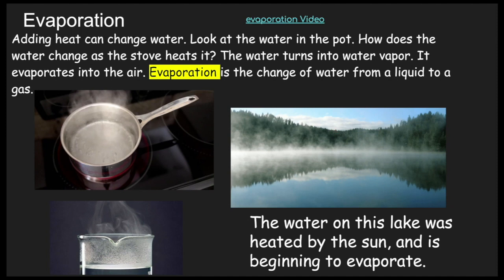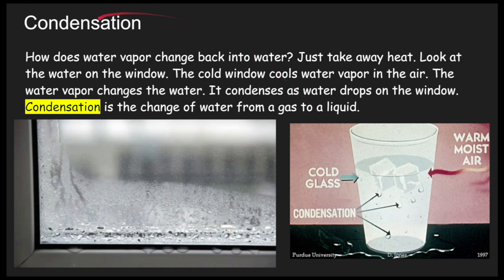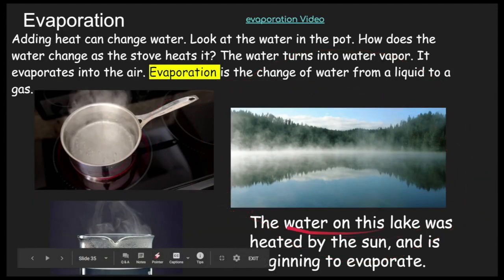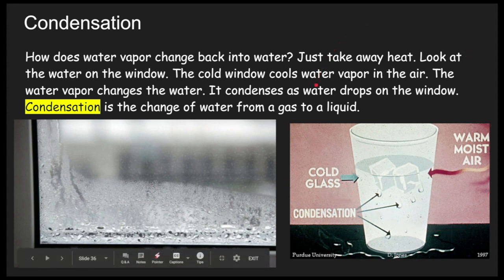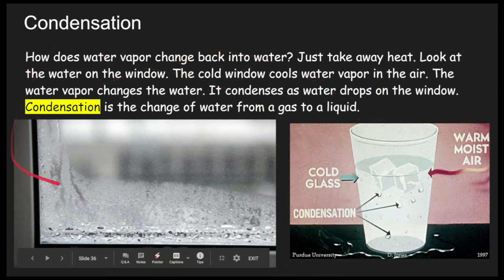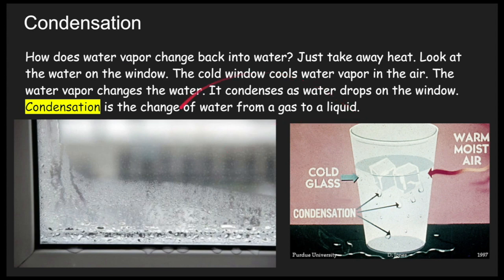But it doesn't stay a gas forever. Eventually it does turn back to water, and that's through a process called condensation. How does water vapor change back into water? Just take away heat. In order for evaporation to happen you need to add heat, but for condensation — to turn the water vapor back to water — you need to take away heat. Let's look at this window. When somebody took this picture it was probably the middle of winter and the window was very cold. When the air hits this cold window, the water vapor inside the air begins to change back into water because you are taking away heat, making it cold. Condensation is the change from water as a gas to a liquid.